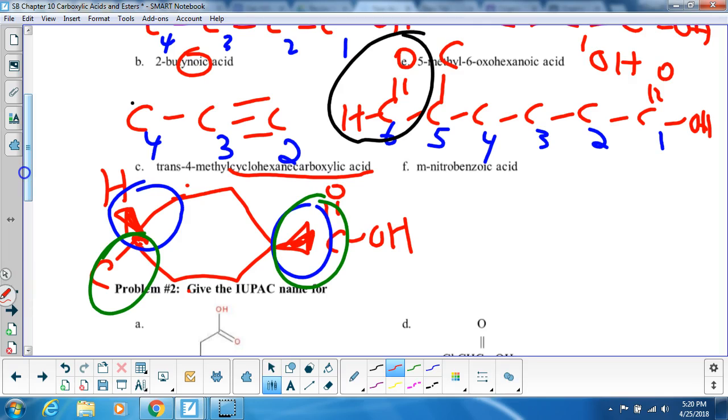Try the next one. We have m-nitrobenzoic acid, so I'm really getting good at drawing hexagons here. So here's my benzoic acid, so meta is ortho-meta, so here is my nitro, there you go.